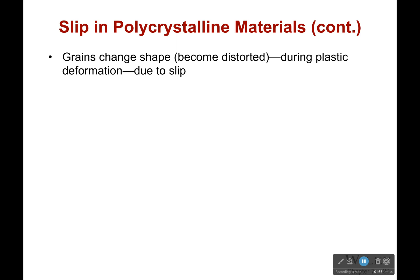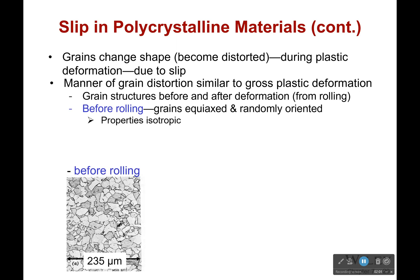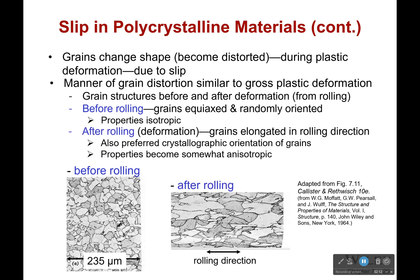Now, during plastic deformation, grains change shape due to the slip. When it comes to all these grain structures before and after deformation, it's very similar to what's happening to the overall structure — the gross plastic deformation. So if the material gets longer and thinner, your grains are going to get, on average, longer and thinner as well.